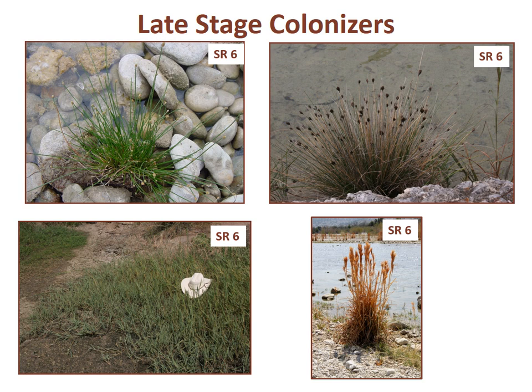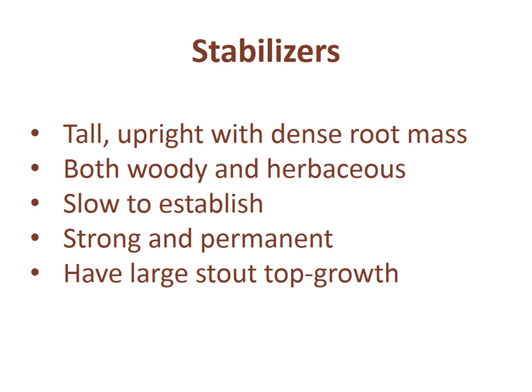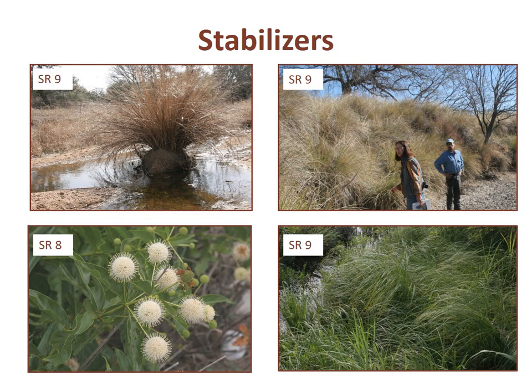Late-stage colonizers have a slightly higher stability rating than early-stages and pioneers, but still need the help of strong stabilizers to resist and dissipate flood energy. Stabilizer plants are tall, upright plants with strong, dense root mass — both woody and herbaceous, slow to establish, yet strong and permanent with large, stout top growth. Woody stabilizer plants function as riparian rebar because of their large root diameter and their ability to interlace with fibrous herbaceous roots. Some examples of stabilizer plants include switchgrass with SR9, buttonbush with SR8, emery sedge SR9, and gulf cordgrass with SR9.